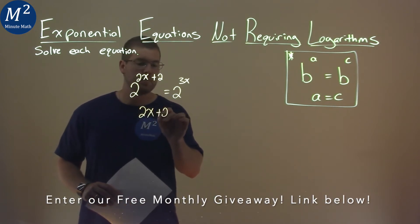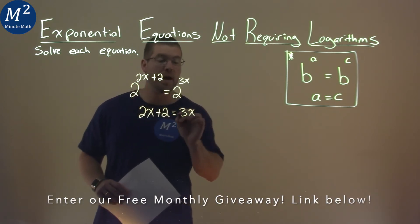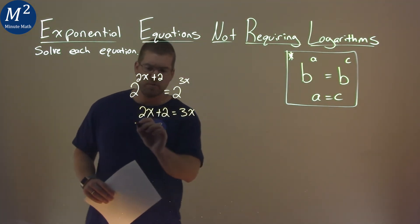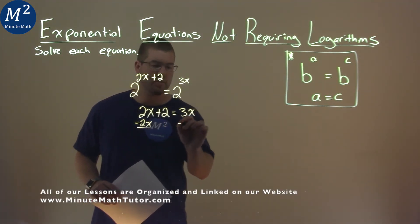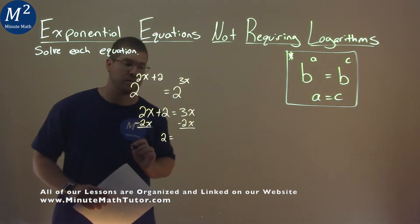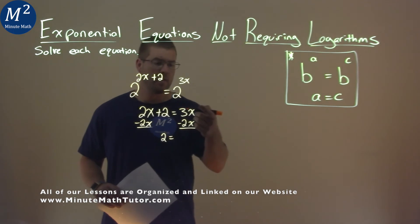2x plus 2 is equal to 3x and now we're solving for x. We subtracted 2x to both sides, combine our like terms, and 2 is just left over on the left hand side and on the right hand side 3x minus 2x is just 1x.